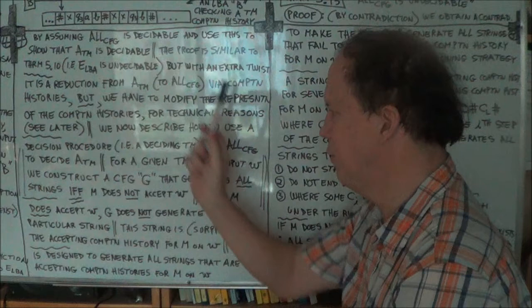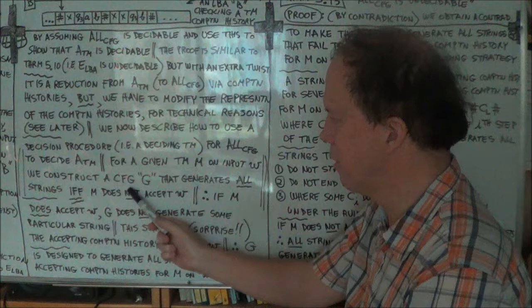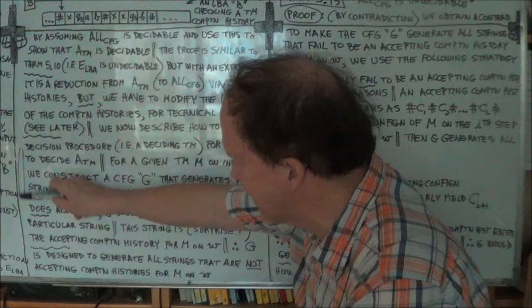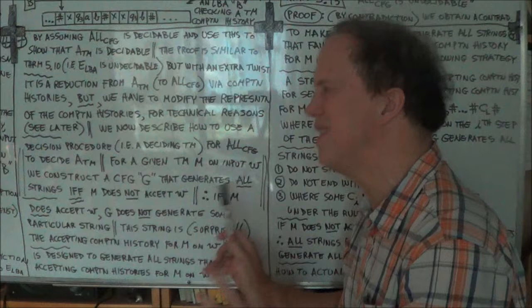What I'm about to say is critical — it's the heart of the proof, the main idea. Here's the strategy: we're going to construct a grammar G.